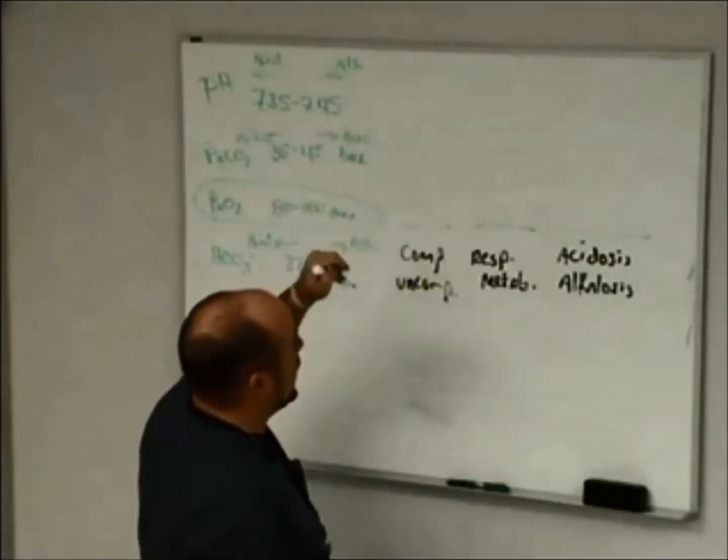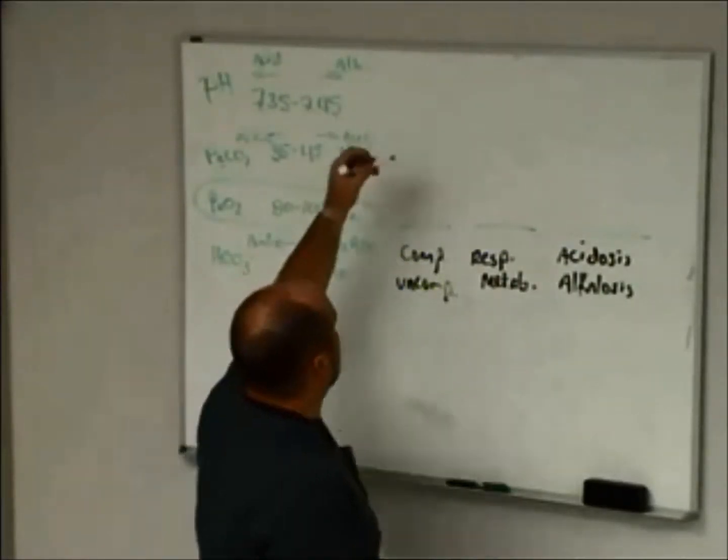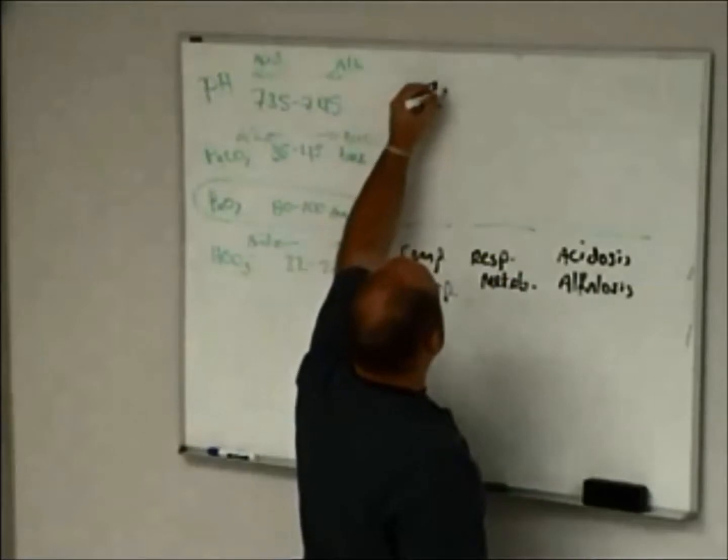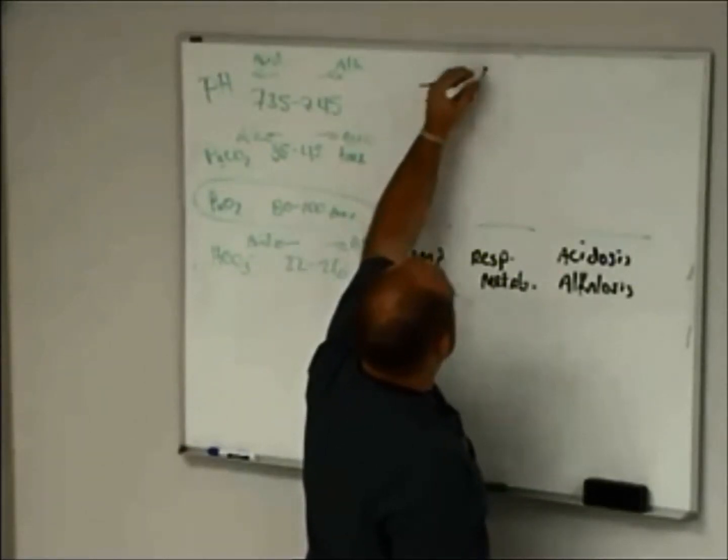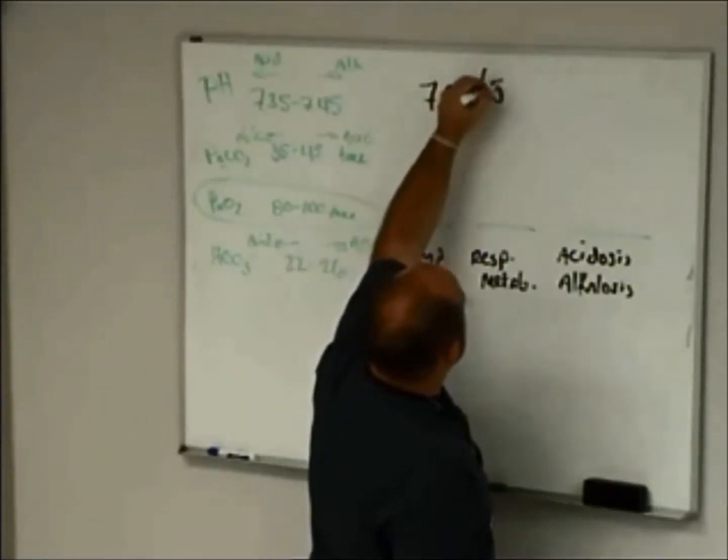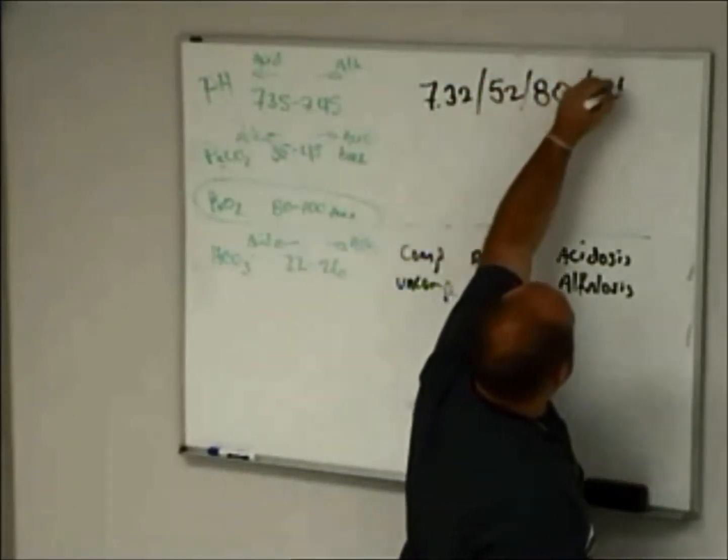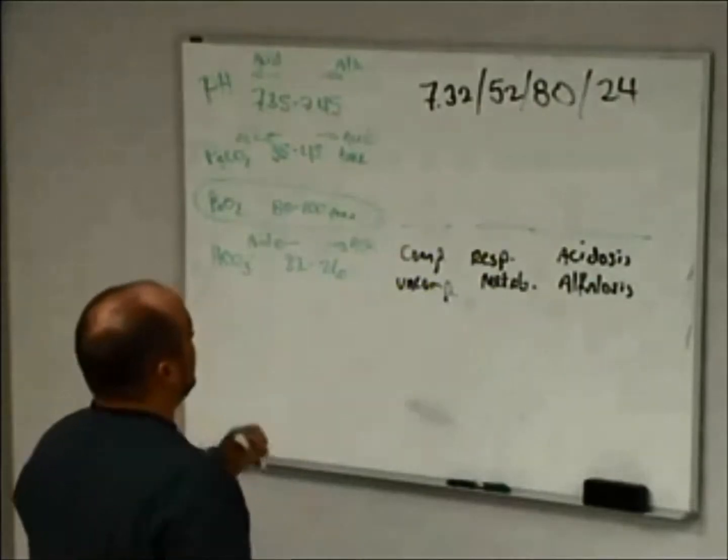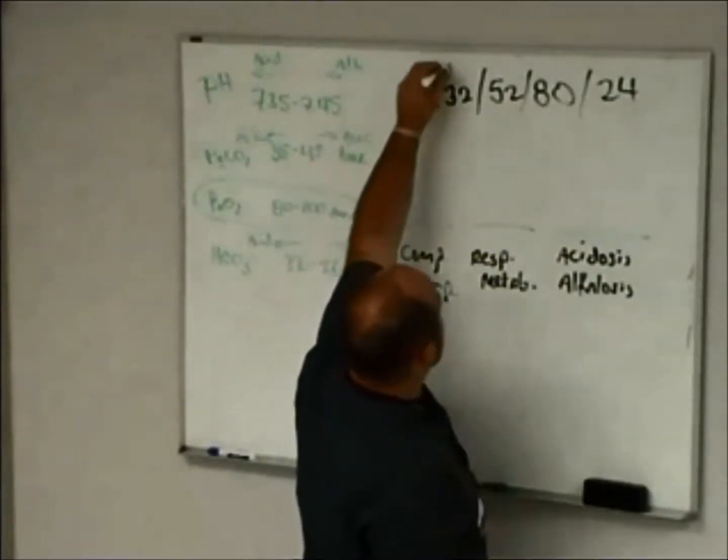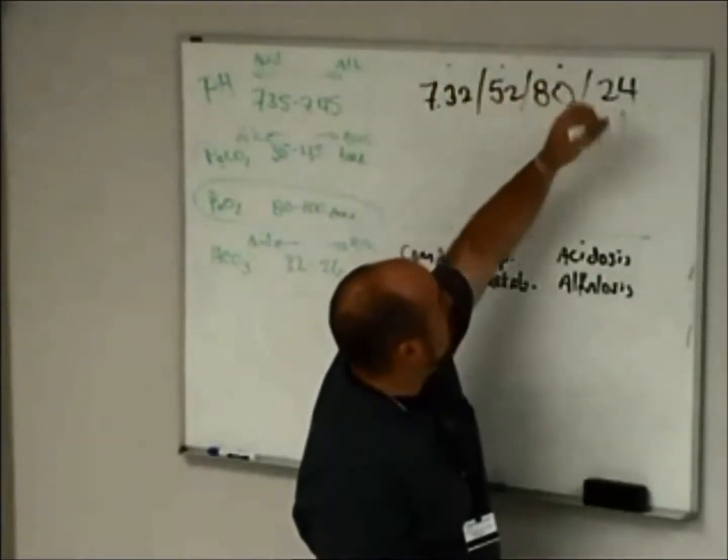So let's get a blood gas just to start off with. Let me just give you one. Let's go 7.32, 52, 80, and 24. So in this case, we're writing it pretty much in this order. This is pH, CO2, PO2, and bicarb.